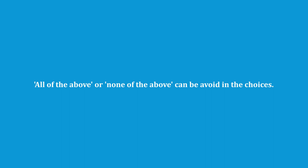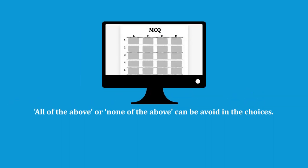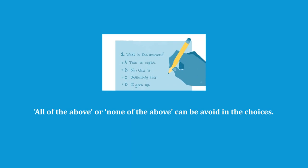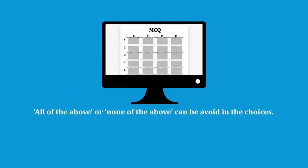"All of the above" or "none of the above" should be avoided in computer-based MCQs. In pen-and-paper tests, these options appear at the last choice, but in computer-based MCQs the system may shuffle options, causing "all of the above" to appear at the top, which is incorrect. If you do include these two options, they must always be at the bottom of the choices. It is best to avoid them entirely for computer-based MCQs.